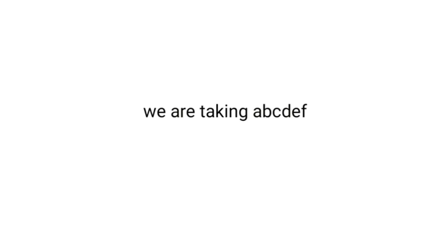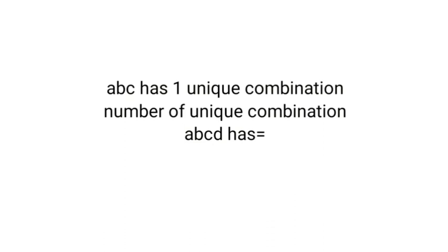For ABCDE, which has 5 letters, we start building up. A 3-letter set ABC has only one unique combination. So the number of unique combinations ABCD has equals the number of unique combinations ABC has multiplied by 2 — that is 1 times 2, giving ABCD two unique combinations.